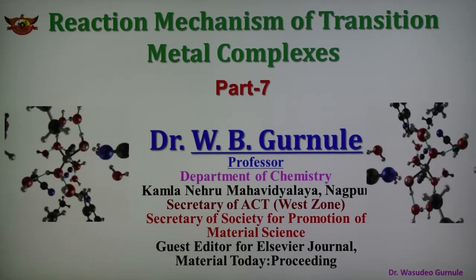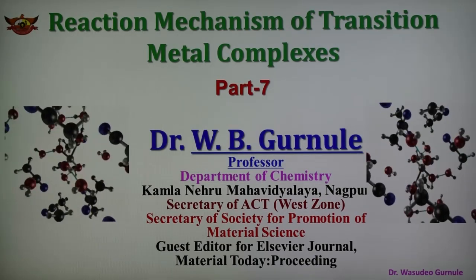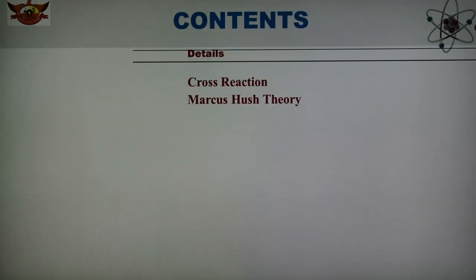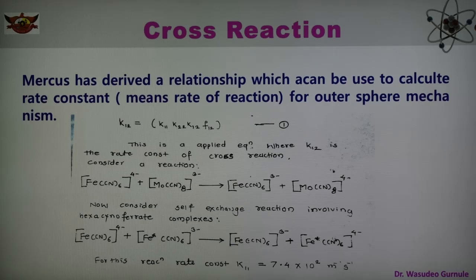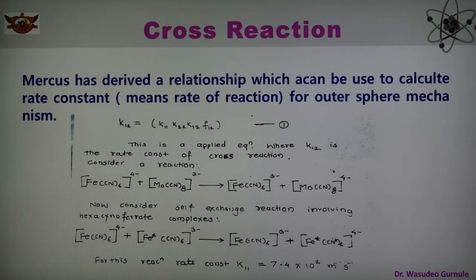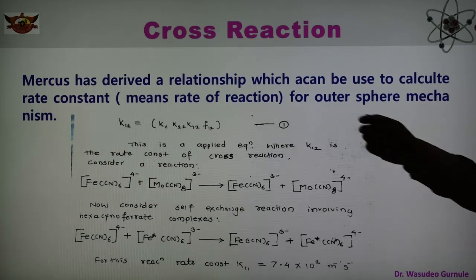Today's topic is the reaction mechanism of transition metal complexes. In this part number 7 we are discussing the cross reaction, also known as the Marcus-Hush theory. Marcus has given an important relationship which can be used to calculate the rate constant for outer sphere mechanism reactions.